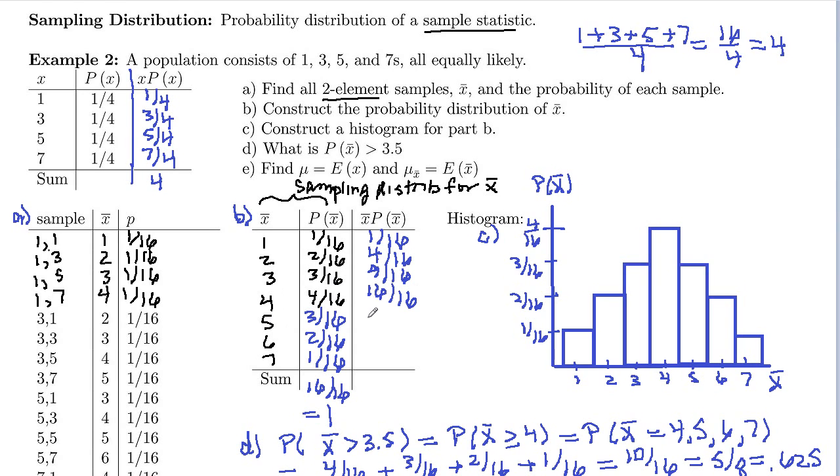5 times 3/16ths, 15/16ths. 6 times 2/16ths is 12/16ths. And then 7 times 1/16th is 7/16ths. Okay, and then we add all these guys up. And if you do that, you will get 64 out of 16, which is equal to 4.